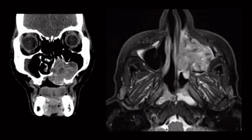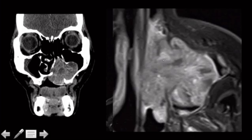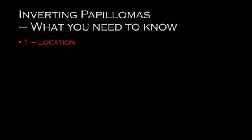We've got a big mass here expanding the maxillary antrum, and we've got an MRI. This is the characteristic feature — see how it sort of looks like a brain? It's got what you might call white matter and gray matter, a cerebriform appearance. That's a buzzword. This is an inverting papilloma.